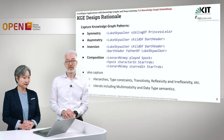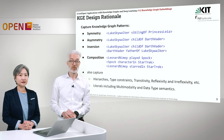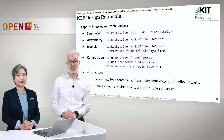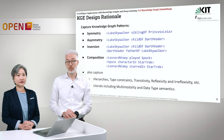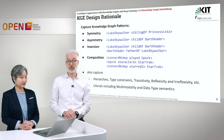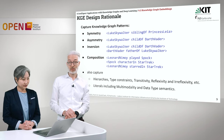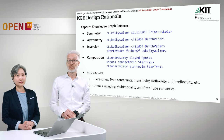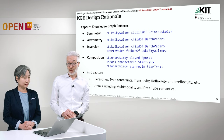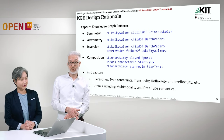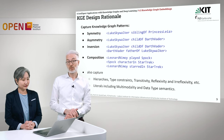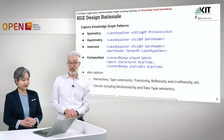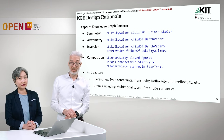The design rationale for knowledge graph embeddings is that we want to capture knowledge of graph patterns. For example, we want to find symmetry — like Luke Skywalker is a sibling of Princess Leia, then of course Princess Leia is a sibling of Luke Skywalker. Also anti-asymmetry: Luke Skywalker is a child of Darth Vader, but not the other way around. We want to know inversiveness — which property is inverse to another — simply by seeing that Luke Skywalker is the child of Darth Vader and on the other hand Darth Vader is the father of Luke Skywalker. Furthermore, compositions are interesting: Leonard Nimoy played Spock and Spock was a character in Star Trek, which means Leonard Nimoy starred in Star Trek. We also want to capture hierarchies, type constraints, and properties like transitivity, reflexivity, and irreflexivity.